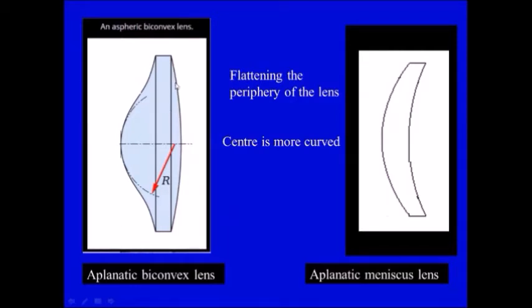It can be aplanatic by a convex lens, as in this shape, or even the meniscus lens can be made aplanatic by flattening the peripheral part of the lens.